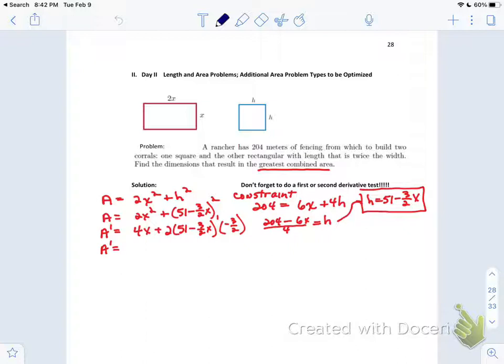Clean this up. A prime equals 4x. And then these twos can cancel. So then what you're really doing is negative 3 times 51, which is negative 153. And then negative 3 times negative 3 halves x, which is going to be positive 9 halves x. So 4x and 9 halves x can combine to be 8.5x minus 153. That equals 0 to get my critical value. My critical value ends up being 18.